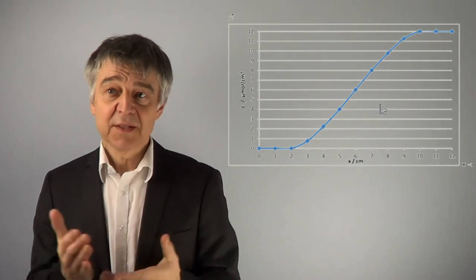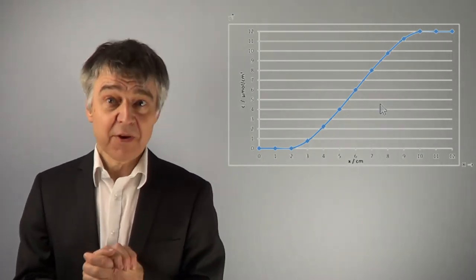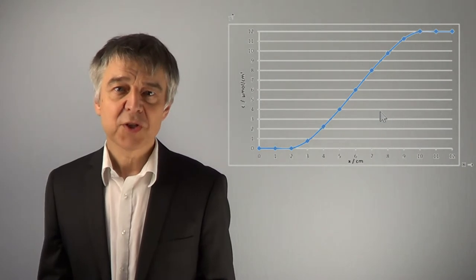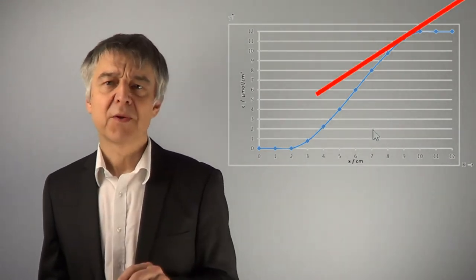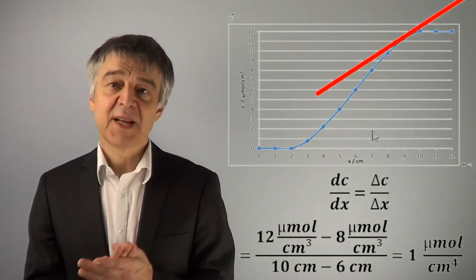The concentration gradient corresponds to the slope of the curve. If we apply the tangent at x equals 9, we can estimate the slope to about 1 mole over centimeter to the fourth.